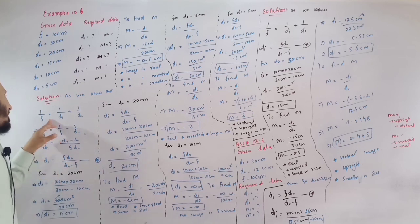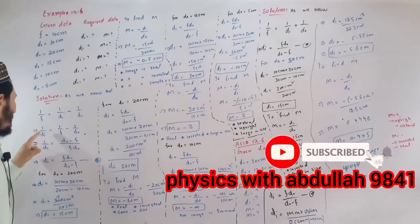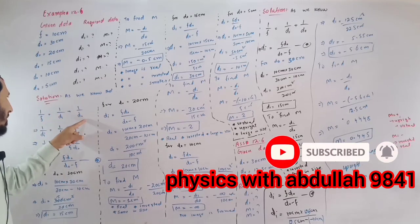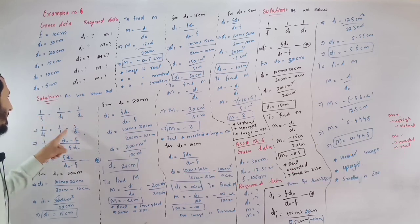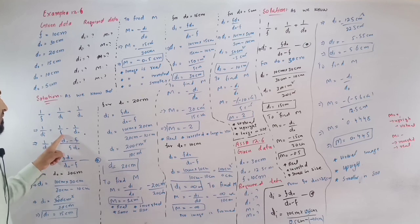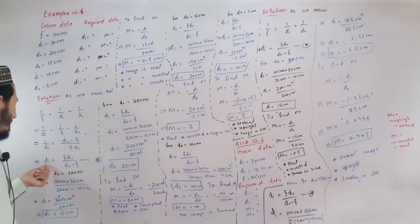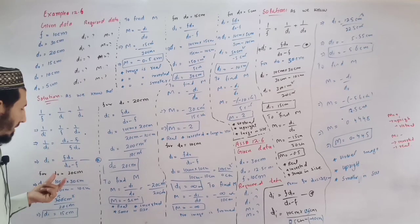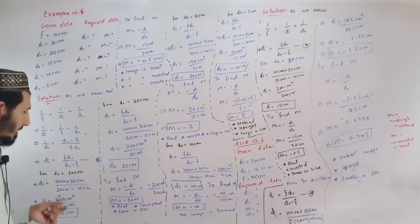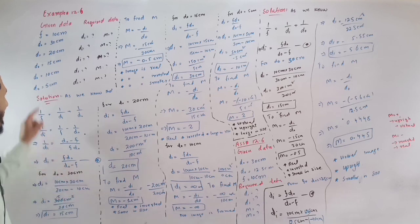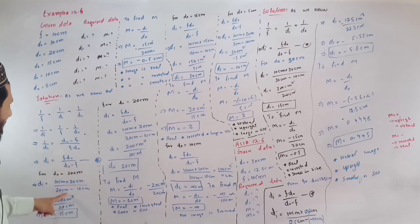Now the solution: 1 over f equals 1 over di plus 1 over d0. 1 over f minus 1 over d0. Di is equal to f times d0 divided by d0 minus f.